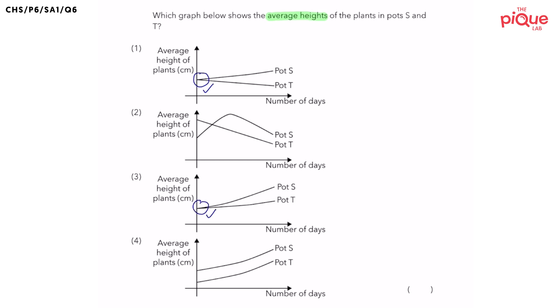But how about options two and four? What do we notice about the average height of plants in pots S and T in the beginning? We can see that the average height of the plants are starting off at different points. So with that, we can eliminate options two and four.